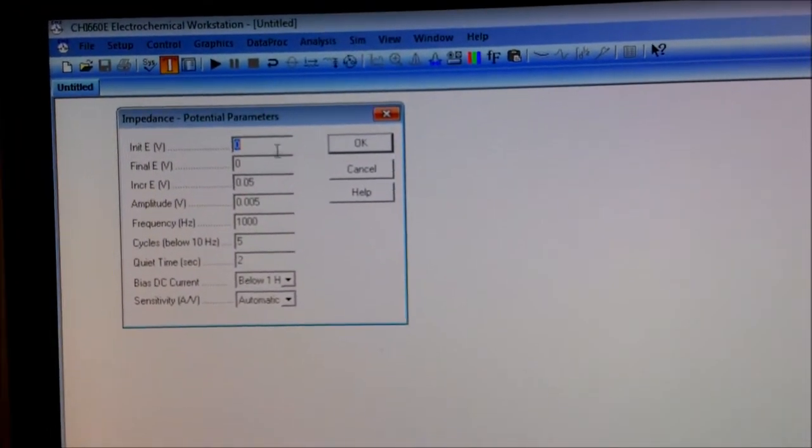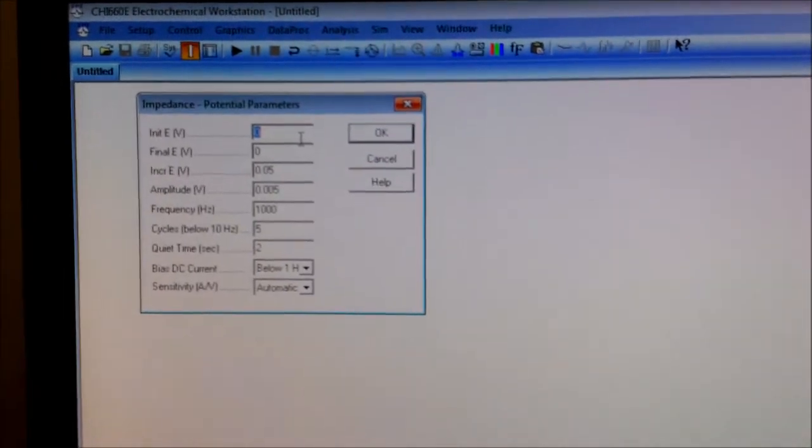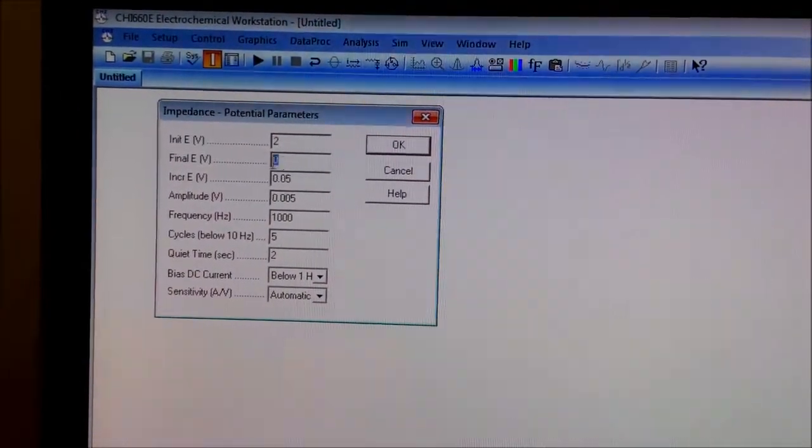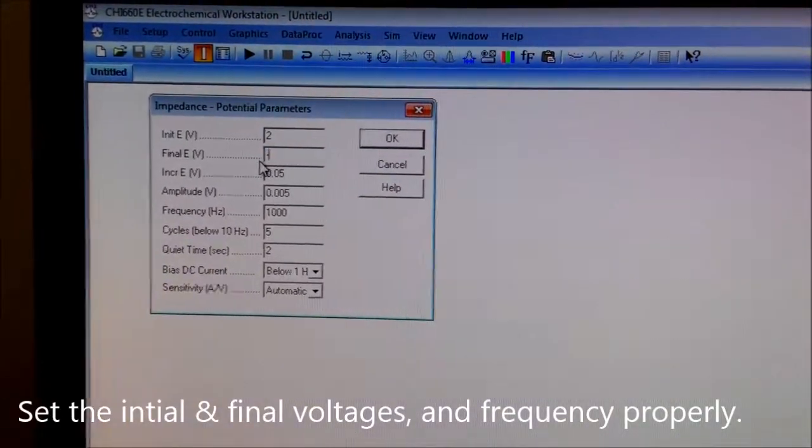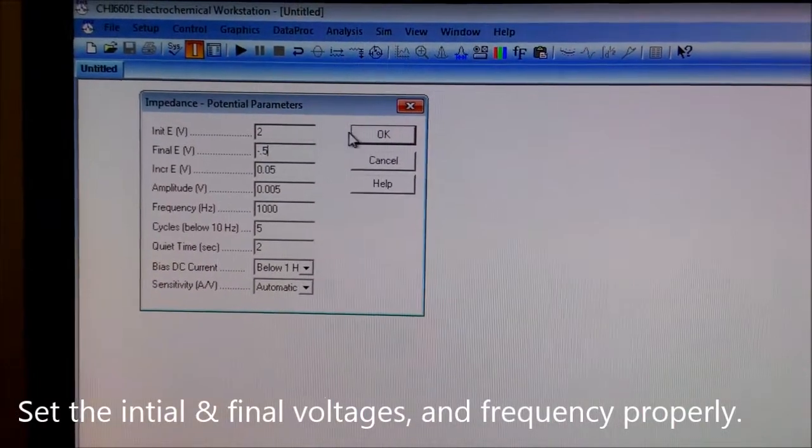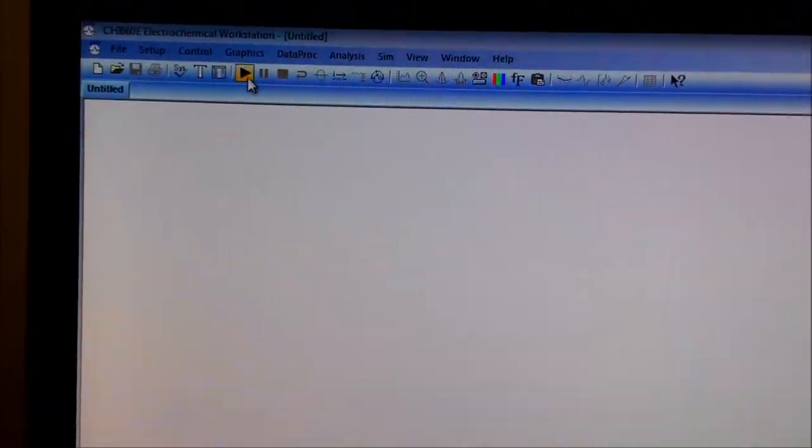Here comes the parameter window. I am selecting initial voltage 2, final voltage as -0.5, and the frequency is 1 kHz. OK, run it.